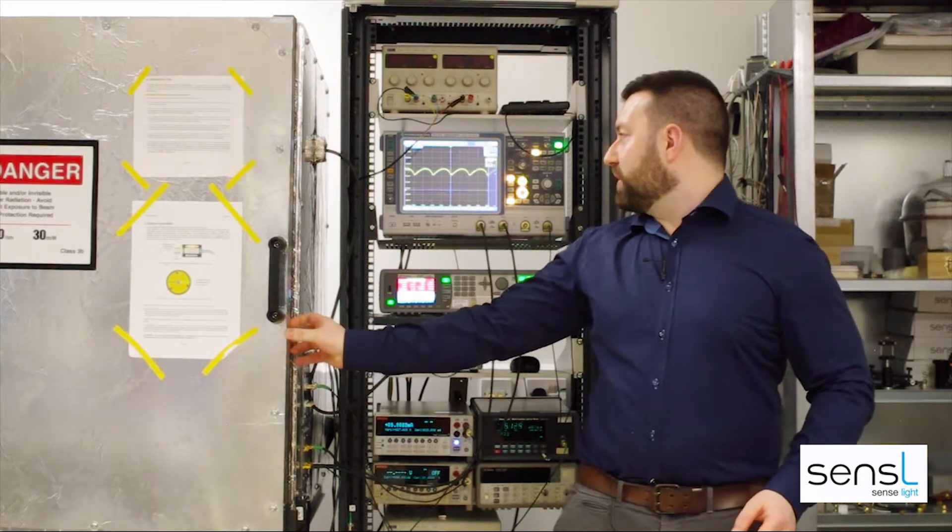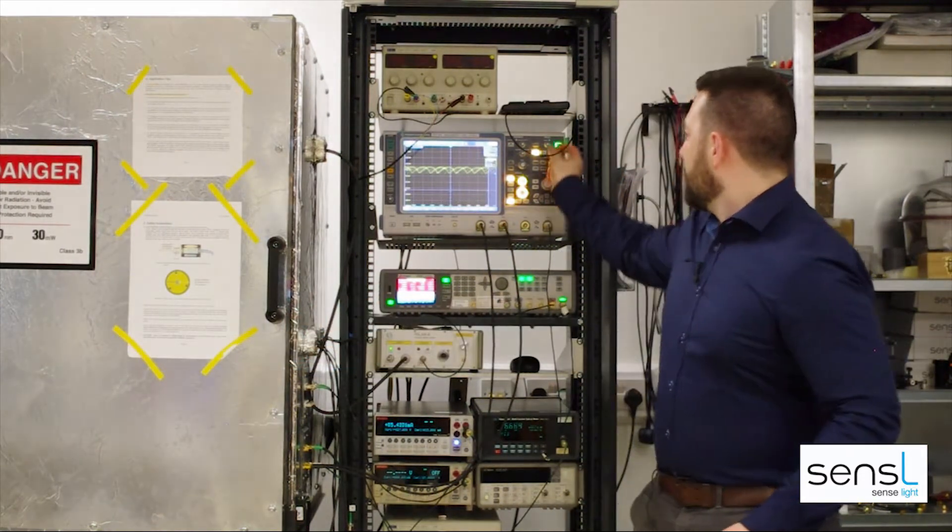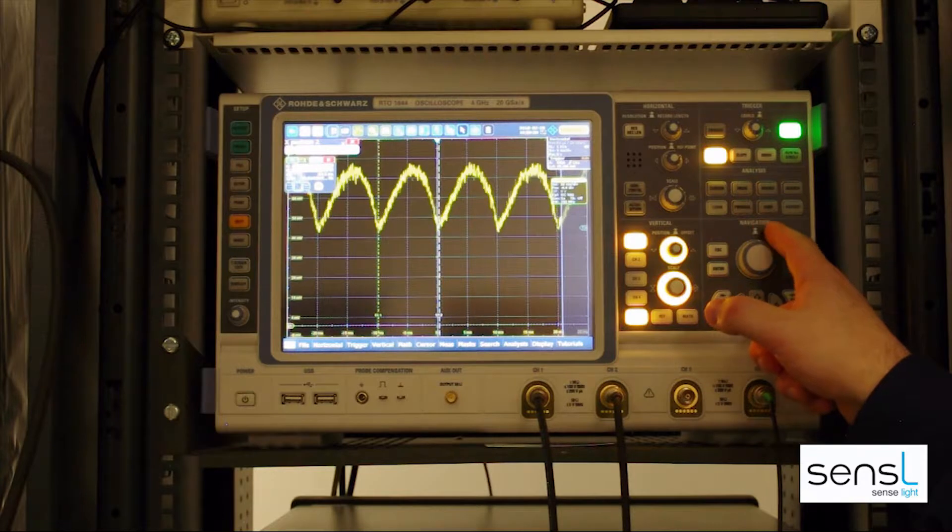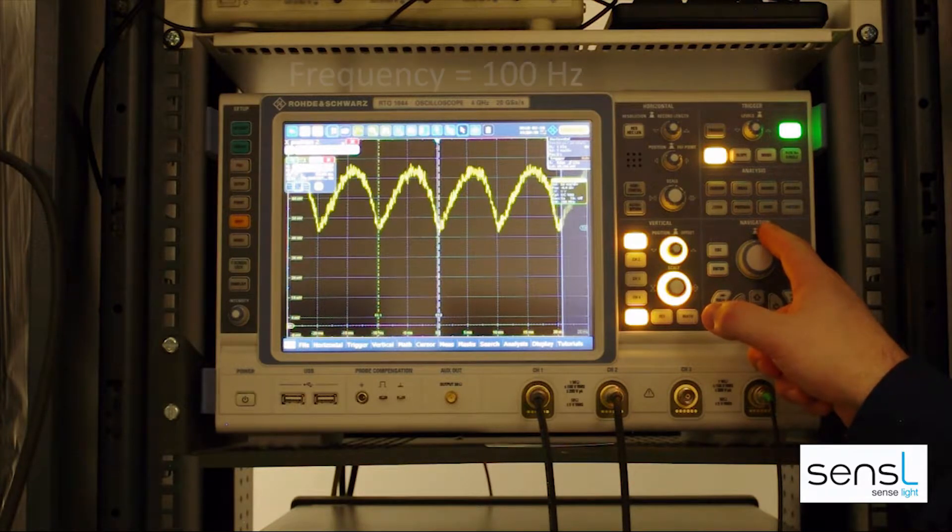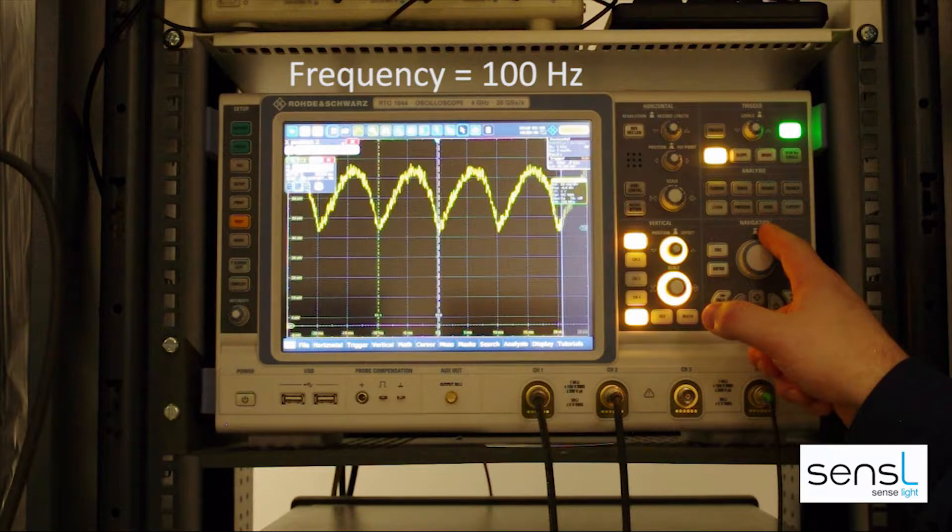all we need to do is reduce the amount of light falling on the SIPM and adjust the scope. The frequency that you will see in the US and Canada is around 120 Hz and around 100 Hz in the rest of the world.